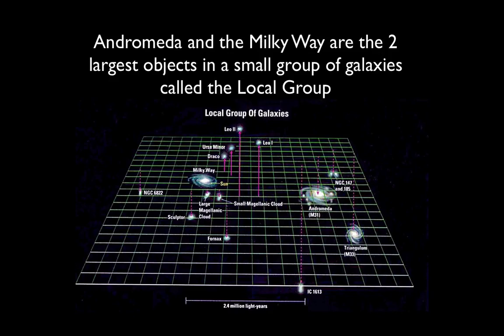The reason the Milky Way and Andromeda will collide is that they are actually quite close to each other — they are the two largest objects in a small group called the Local Group. The distance between the two main galaxies is about 2.5 million light years. Each big galaxy has its own satellite galaxies orbiting it. The Milky Way has two main satellites: the Large Magellanic Cloud and the Small Magellanic Cloud. These are our two closest, brightest satellites, and if you ever visit the southern hemisphere, they are easily visible with the naked eye.